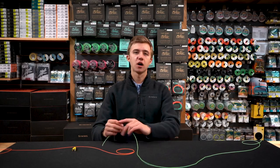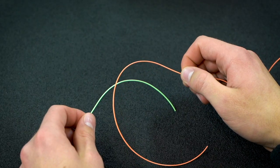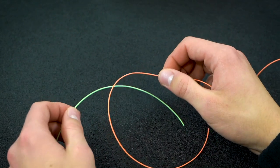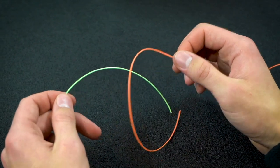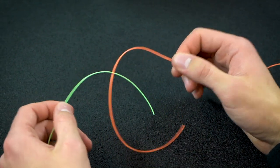What we're going to do to start this knot is take both ends of the leader or tippet material that we want to connect, overlay them so that the tag ends overlay each other with a healthy amount of working room here.